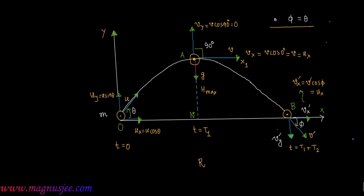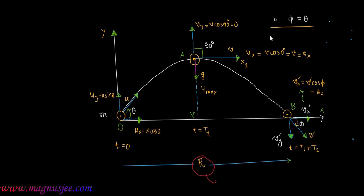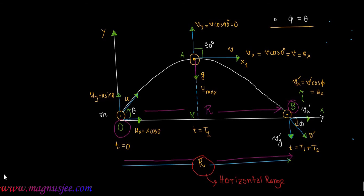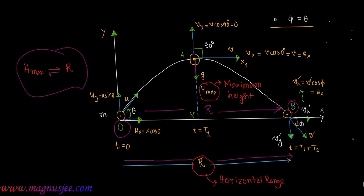R is the horizontal range — the distance between the two points O and B, that is the horizontal displacement of the projectile. H max is the maximum height attained by the projectile. We have to find the relation between maximum height H max and horizontal range R.